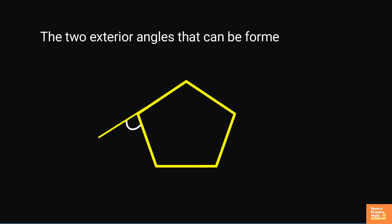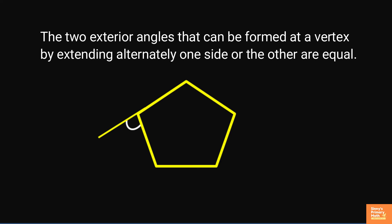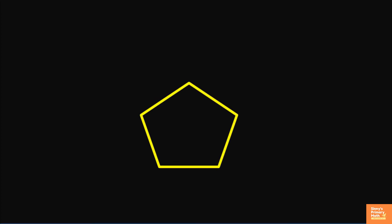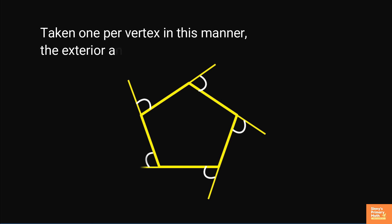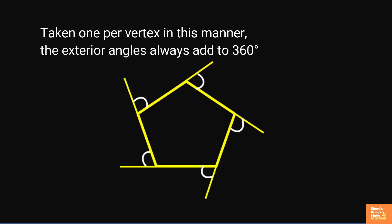The two exterior angles that can be formed at a vertex by extending alternately one side or the other are equal. Taken one per vertex in this manner, the exterior angles always add up to 360 degrees.